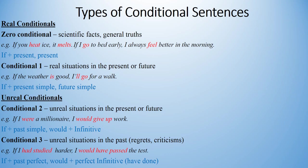Conditionals 2, or the second conditionals, are also called unreal because they describe imaginary hypothetical situations. They refer to the present or to no particular time. For example, if I were a millionaire, I would give up work. As you can see from the formula in blue, we use the past simple in the if clause and would plus infinitive in the main clause. They are called unreal because the situation 'if I am a millionaire' is hardly ever possible.